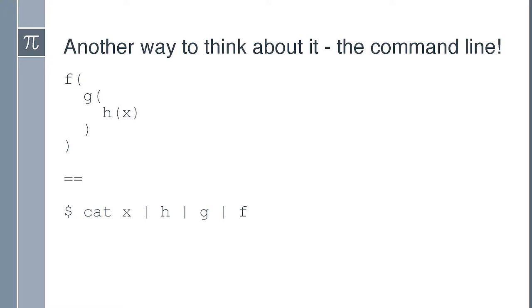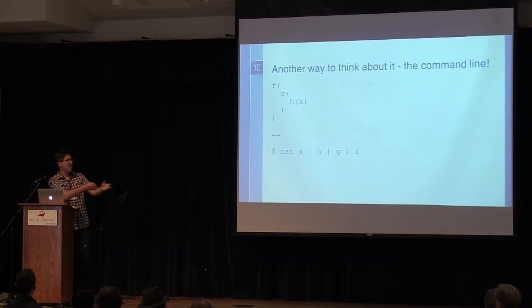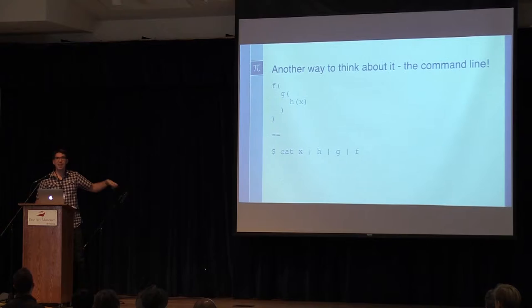The breakthrough for me was realizing I had done functional programming before — the command line is just functional programming. If I have F of G of H of X, that looks complicated and scary, but it's just piping data from one thing to another. I take whatever's in X, pass it to H and transform it, send it to G, then to F. At each point I'm getting data, doing something with it, sending it on — I'm not setting variables.